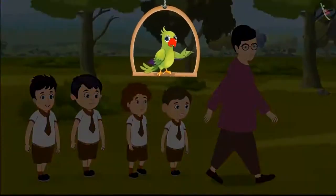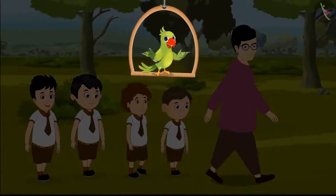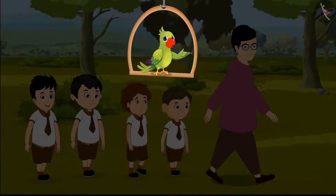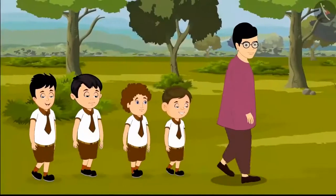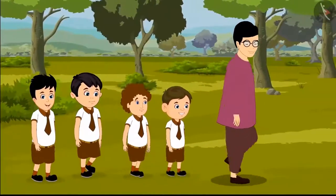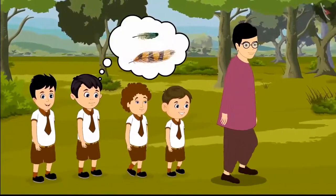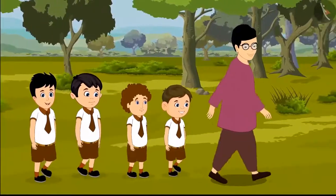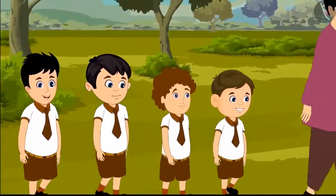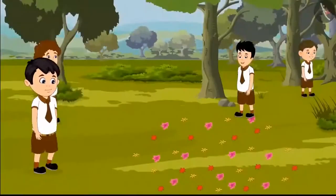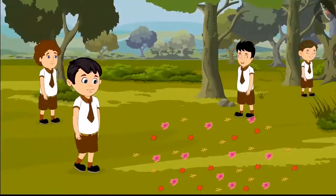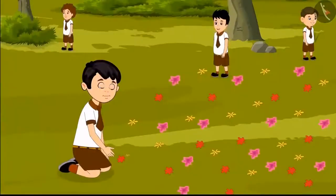Today Chotu was taken for a walk by the school to a nearby forest. Chotu has homework to gather some things and paste them in his notebook. He thought of taking two flowers, two leaves and two bird feathers from the forest. While walking, Chotu found a lot of fallen flowers under a tree and picked two flowers from them.